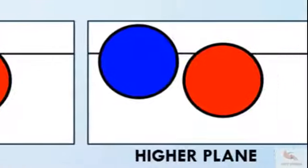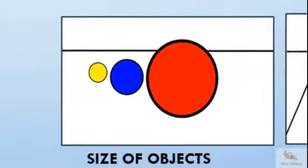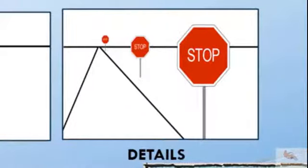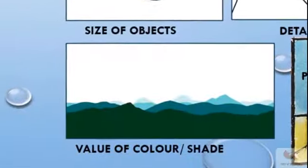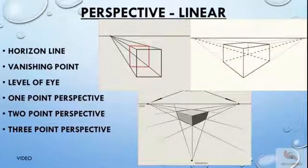When two objects overlap, the one behind appears further. Two objects of same size, one on the higher plane appears further. A smaller object adjacent to a bigger object appears further. An object far away will have less details of its structure. An object far off will have lower value, whereas an object close by will be darker and brighter.